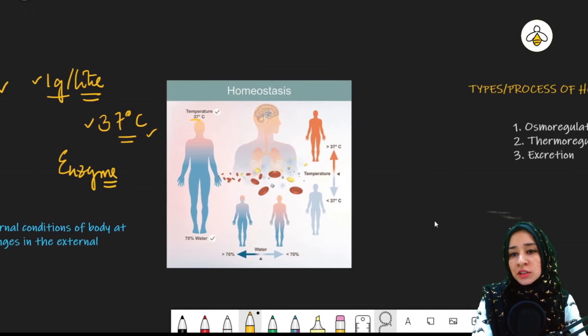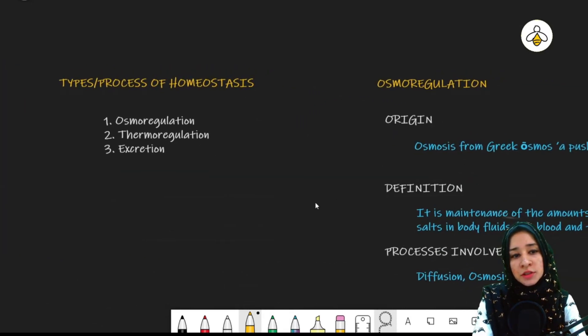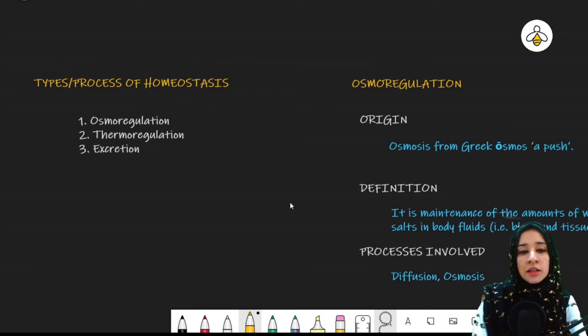So there are now three processes. We have three processes in homeostasis which are playing different roles, different things of maintenance in our body. They are osmoregulation, thermoregulation and excretion. We will discuss it one by one in detail. First of all, we have osmoregulation.